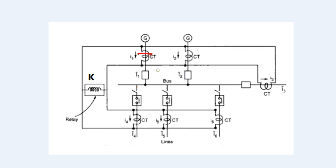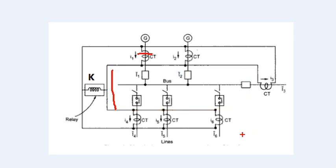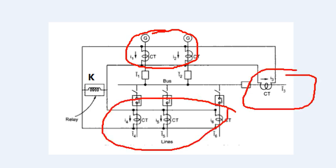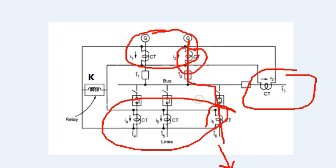This zone covers the bus bar. In normal operation, the current from the two generators supplies the load. The current in equals the current out, so we read the same value — the currents balance.